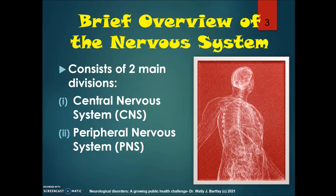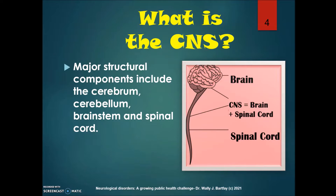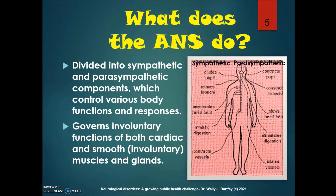Here's a brief overview of the nervous system. The nervous system consists of two main divisions: the central nervous system, abbreviated CNS, and the peripheral nervous system, abbreviated PNS. Major structural components of the CNS include the cerebrum, the cerebellum, the brain stem, and the spinal cord. The autonomic nervous system is divided into sympathetic and parasympathetic components, which control various body functions and responses.